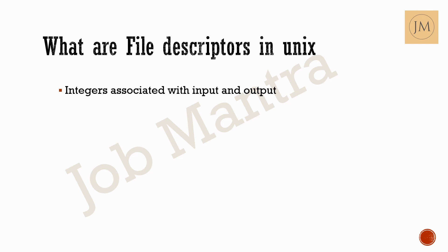Redirection of input to a file by filtering the contents is one of the essential things we need to perform. When a command outputs some text, it can be either an error message or an output message. We cannot distinguish whether it is output text or error text just by looking at what is being printed. However, we can handle them using file descriptors to extract the text associated with a specific descriptor.